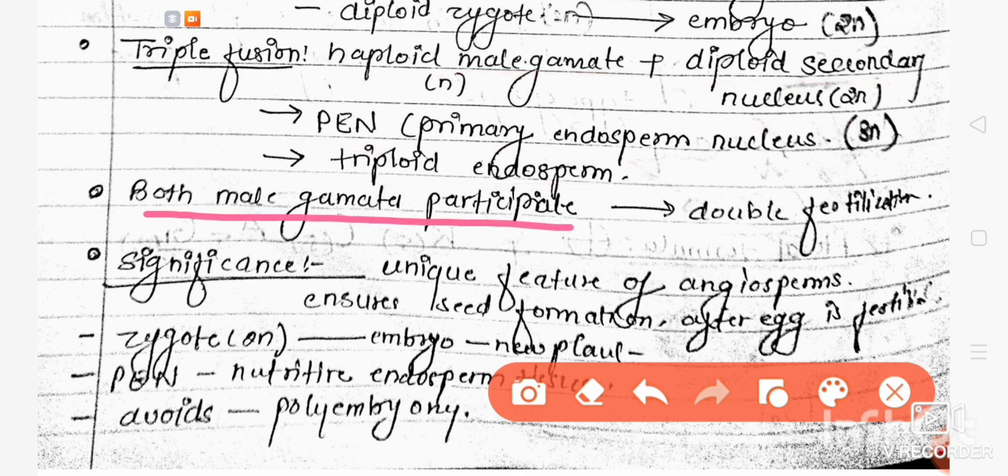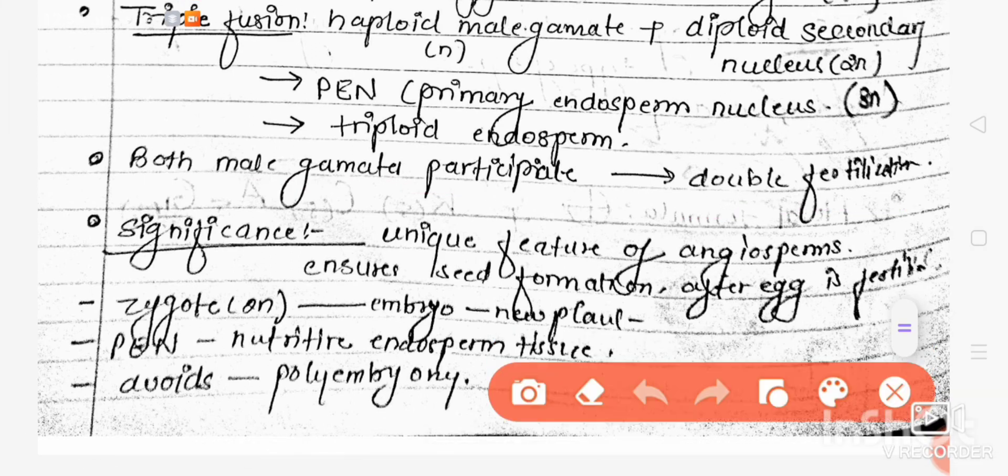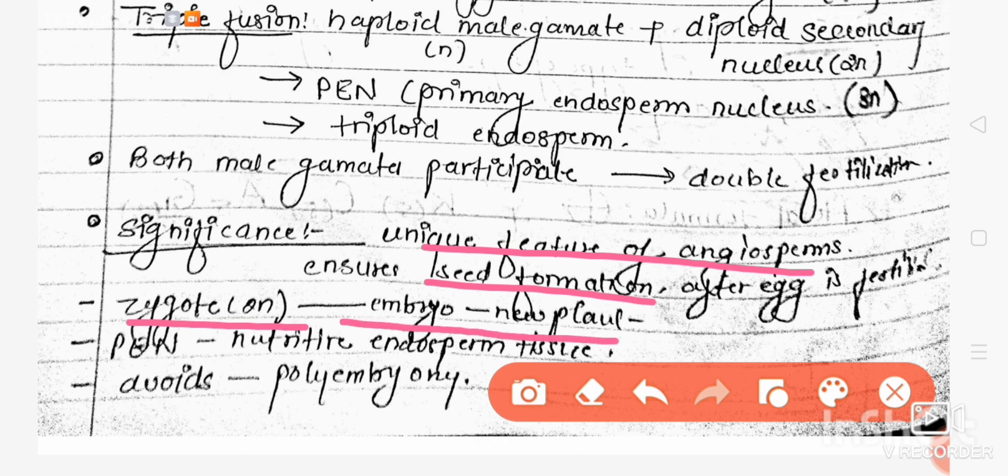We saw that both the male gametes are participating, therefore it is termed as double fertilization. The significance of this double fertilization is that it is a unique feature of angiosperms. It ensures egg fertilization which leads to seed formation. After formation of zygote, further division forms the embryo which leads to formation of a new plant. Due to triple fusion, PEN forms, which is the primary endosperm nucleus, and this is nutritive endosperm tissue that provides nourishment to the developing embryo.